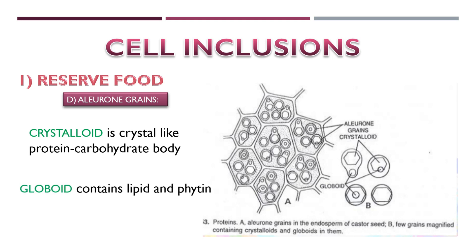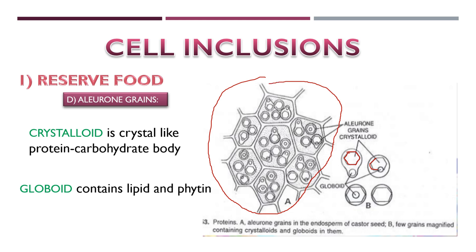A crystalloid is crystal-like. A globoid is a rounded structure. Looking at the image, this is the crystalloid and this is the globoid. In castor seed endosperm, we can see only crystalloid crystals present in the aleuron grains.